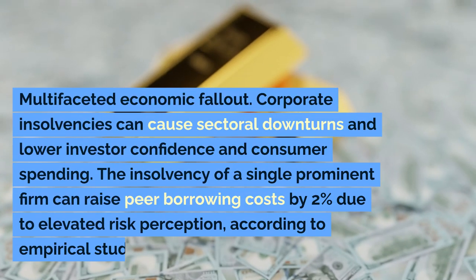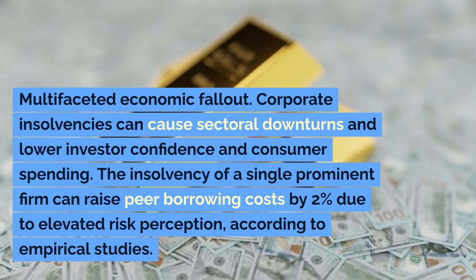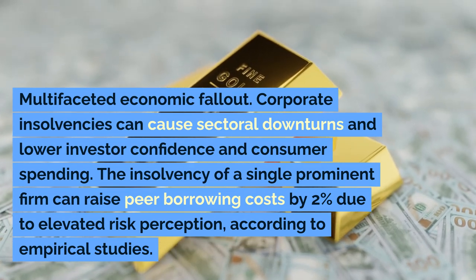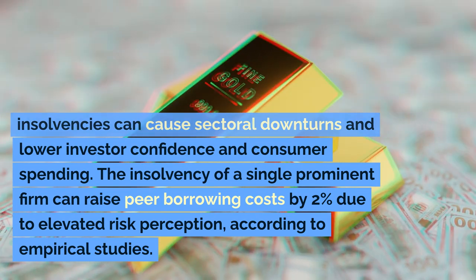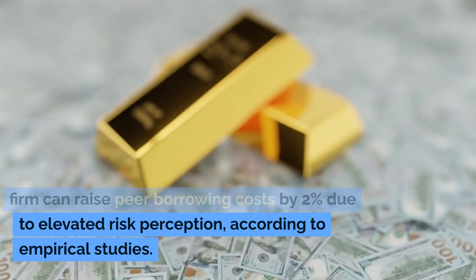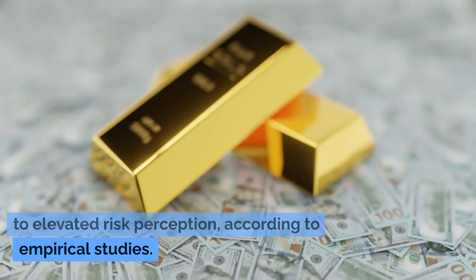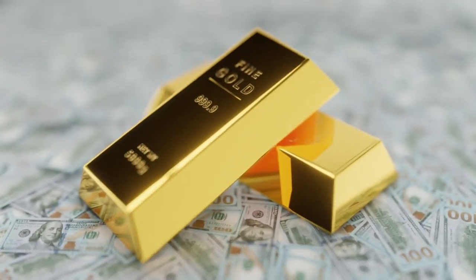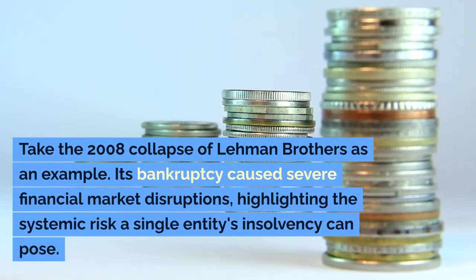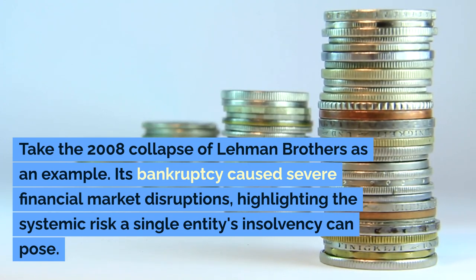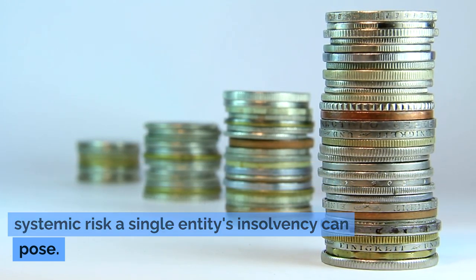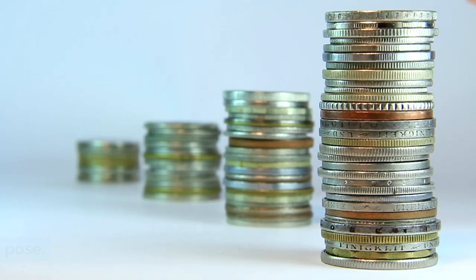Corporate insolvencies can cause sectoral downturns and lower investor confidence and consumer spending. The insolvency of a single prominent firm can raise peer borrowing costs by 2% due to elevated risk perception, according to empirical studies. Take the 2008 collapse of Lehman Brothers as an example — its bankruptcy caused severe financial market disruptions, highlighting the systemic risk a single entity's insolvency can pose.